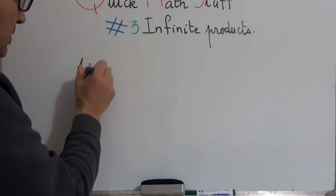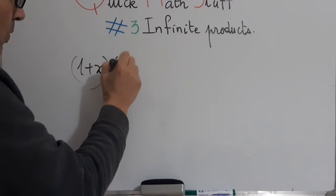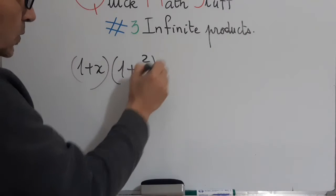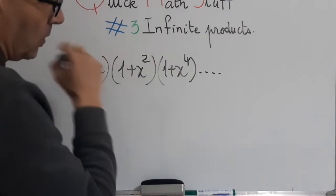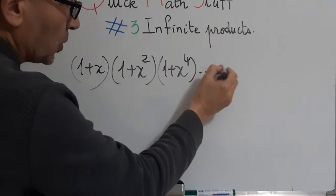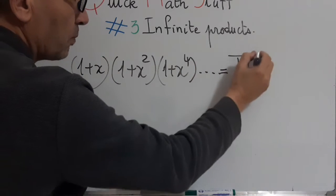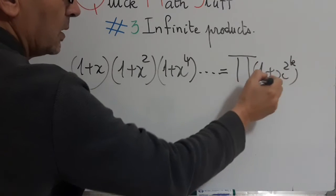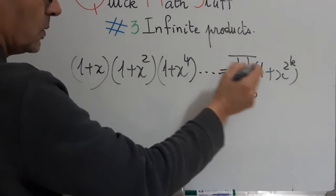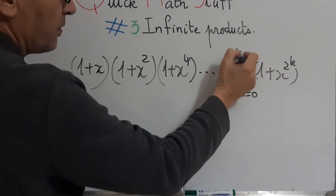It is (1+x)(1+x²)(1+x⁴) and so on. Say in short, that is the product of 1+x^(2^k), k from 0 to infinity.